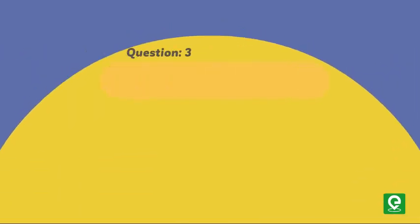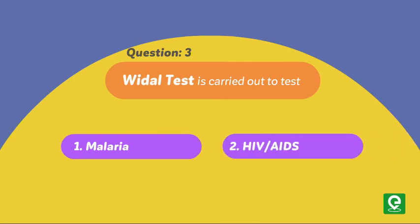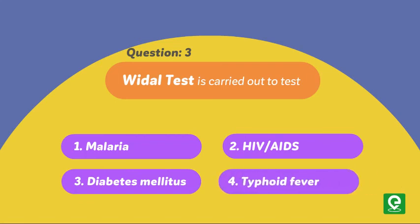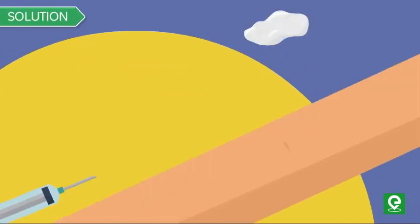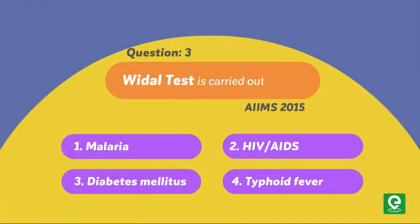Question 3: Widal test is carried out to test — (1) Malaria, (2) HIV or AIDS, (3) Diabetes mellitus, or (4) Typhoid fever. This question was asked in AIIMS 2015. Widal test is carried out to test typhoid fever. Hence, the correct answer is typhoid fever.